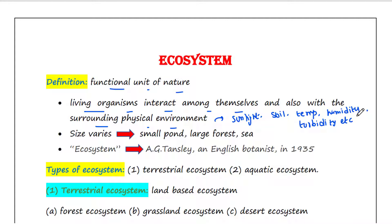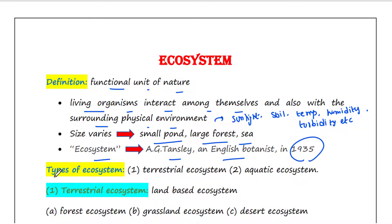These are some abiotic factors or physical environment. Ecosystem varies greatly in size from a small pond to a large forest or sea. The term ecosystem was first coined by A.G. Tansley, who was an English botanist, in 1935.